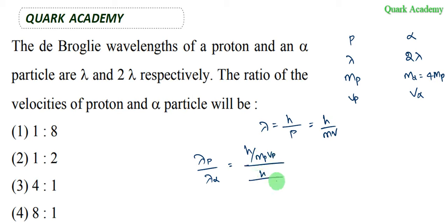Let's simplify this. h will get cancelled and we get (m_α×v_α)/(m_p×v_p). Now we substitute the mass. The mass of the alpha particle is four times the mass of the proton, so 4m_p×v_α equals m_p×v_p.